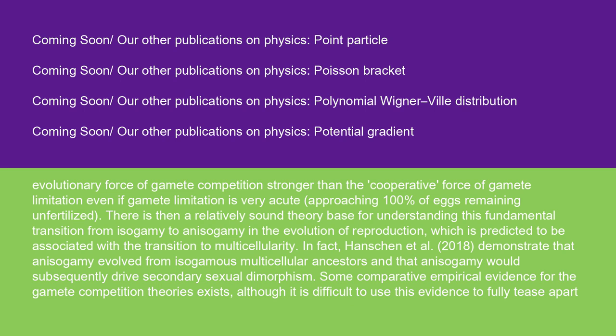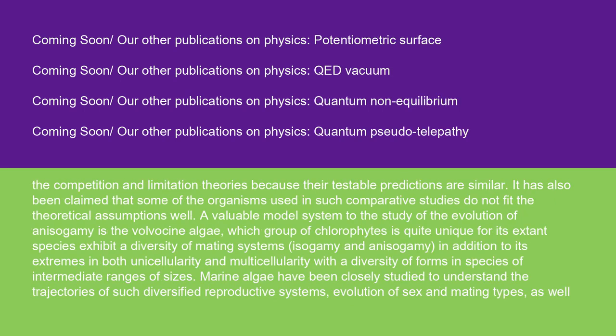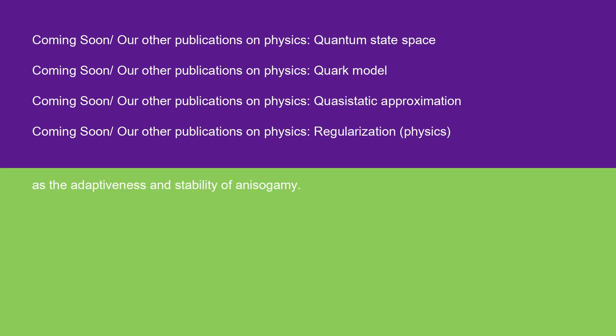Some comparative empirical evidence for the gamete competition theories exists, although it is difficult to use this evidence to fully tease apart the competition and limitation theories because their testable predictions are similar. It has also been claimed that some of the organisms used in such comparative studies do not fit the theoretical assumptions well. A valuable model system to the study of the evolution of anisogamy is the volvocene algae, a group of chlorophytes quite unique for its extant species exhibiting a diversity of mating systems — isogamy and anisogamy — in addition to its extremes in both unicellularity and multicellularity. Marine algae have been closely studied to understand the trajectories of such diversified reproductive systems, evolution of sex and mating types, as well as the adaptiveness and stability of anisogamy.